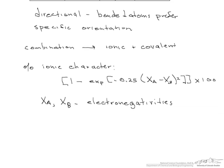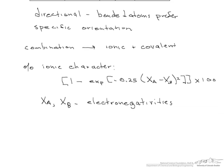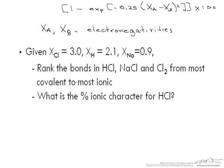So let's look at an example here. If we're given electronegativities of chlorine and sodium, we want to rank the bonds in HCl, sodium chloride, and Cl2 from most covalent to most ionic. And looking at those, the most covalent bond is going to be Cl2, and the next is going to be HCl, finally followed by sodium chloride.